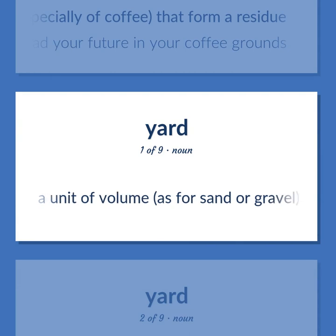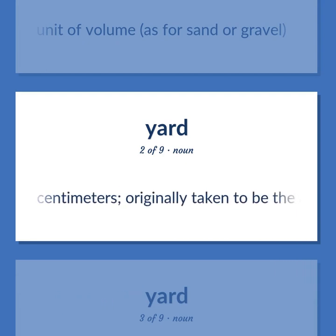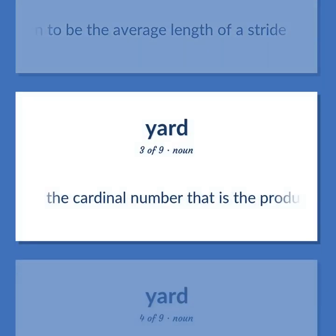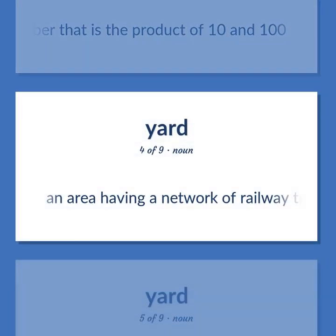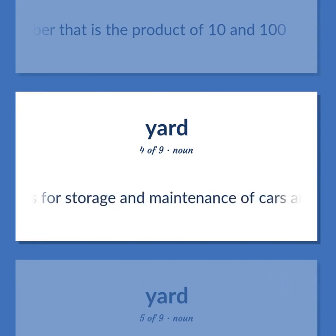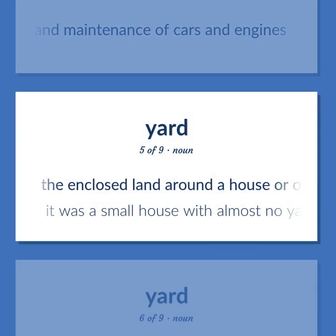A unit of volume, as for sand or gravel. A unit of length equal to 3 feet, defined as 91.44 cm, originally taken to be the average length of a stride. The cardinal number that is the product of 10 and 100. An area having a network of railway tracks and sidings for storage and maintenance of cars and engines. The enclosed land around a house or other building: it was a small house with almost no yard.